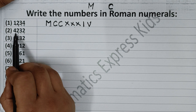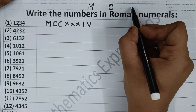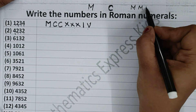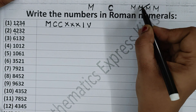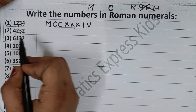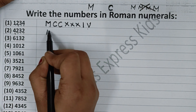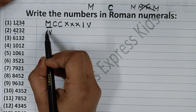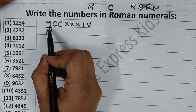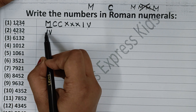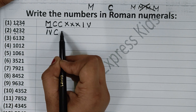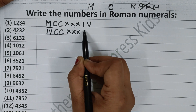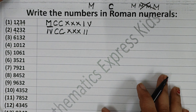Now come to the next one: 4232. How do you write 4000? Don't write M four times — that is not correct. Write 4 and give a bar over it. This bar stands for thousand, so 4 with a bar means 4000. Now 200: write CC. Then 30: write XXX. Then 2: write II. Clear?